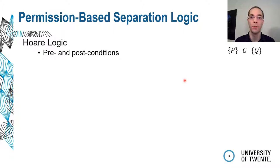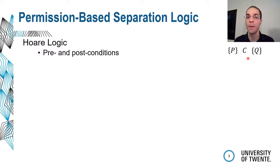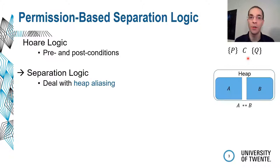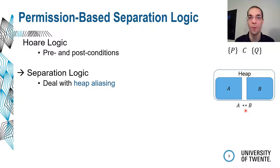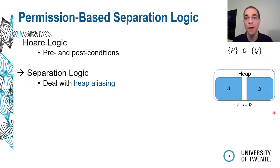One challenge in this kind of program verification comes from using heap memory, because if we access that via pointers, two pointers can point to the same object, and changing one implicitly also changes the other. That means we cannot do localized reasoning and only consider variables within C, because other variables might implicitly affect those variables. One way to deal with that is separation logic. An important construct is the separating conjunct A star B: A has to hold and B has to hold in disjoint parts of the memory, as shown in the diagram. This allows us to use localized reasoning because there cannot be any heap aliasing between A and B.